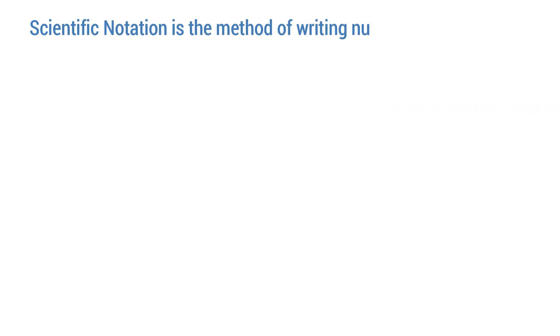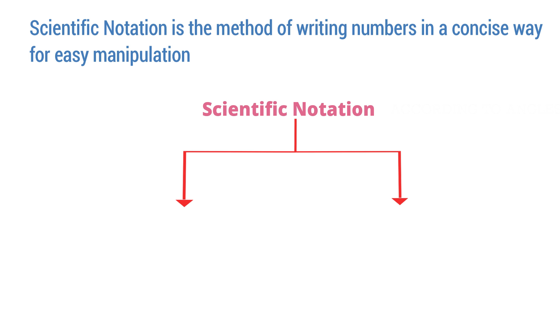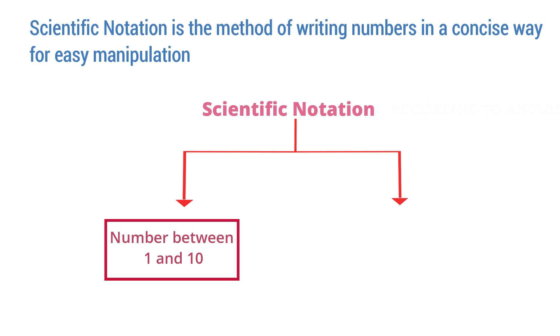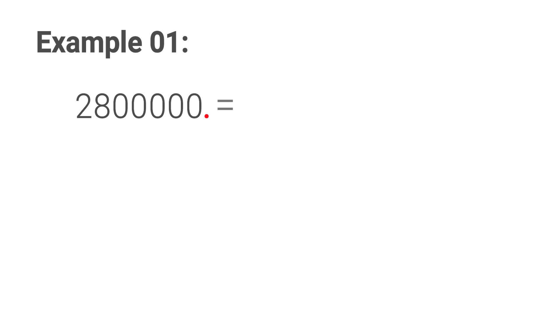It is difficult to manipulate these long numbers, so we use scientific notation to concise such lengthy numbers so that our calculations will be easy. When you write a number in scientific notation it has two parts. The first part is the number between one and ten, and the second part is a power of ten. Look at this example: two million eight hundred thousand.